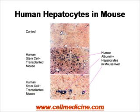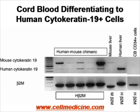Microscopically, here is an immunohistochemistry image where dark-staining cells are positive for human albumin and have a hepatocyte-like morphology. Another important protein and marker of liver function is human cytokeratin 19. In the human-mouse chimeras, there is some staining for human cytokeratin 19, which is positive in human liver, but it is absent in the cord blood starting population.